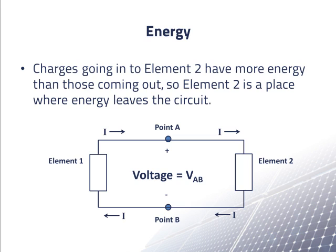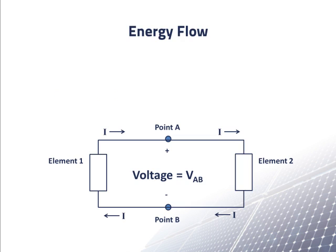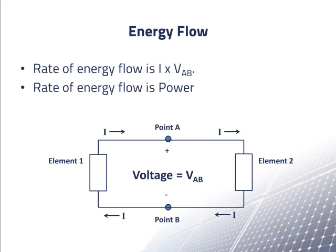All of the energy that enters the circuit through element 1 must leave through element 2. There is a set amount of current that leaves element 1, in charges per second, I. And since element 1 gives a certain amount of energy per coulomb to those charges, V sub AB, the rate at which element 1 gives energy to the circuit is V sub AB times I.